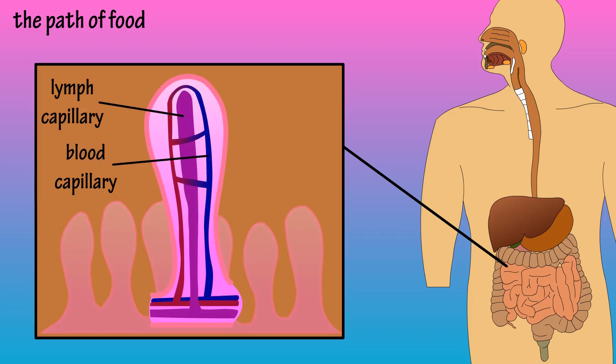The nutrients pass into the interior of the villus. Inside each villus is a tiny lymph capillary and a blood capillary. Here, glucose and amino acids, or carbohydrates and proteins, as well as other nutrients, are absorbed into the blood capillaries and transported to the liver for processing.